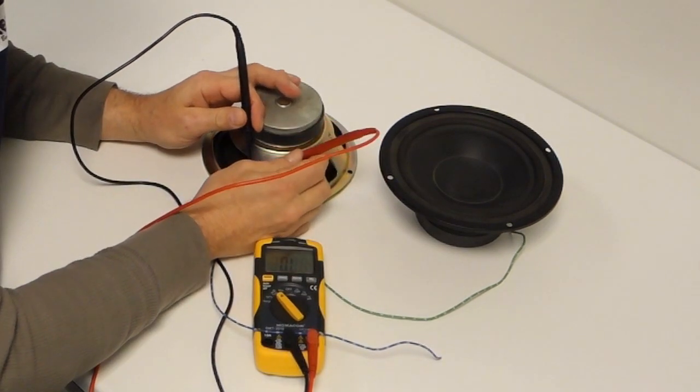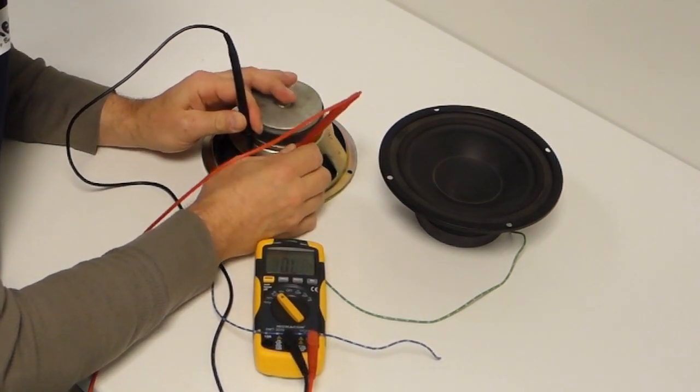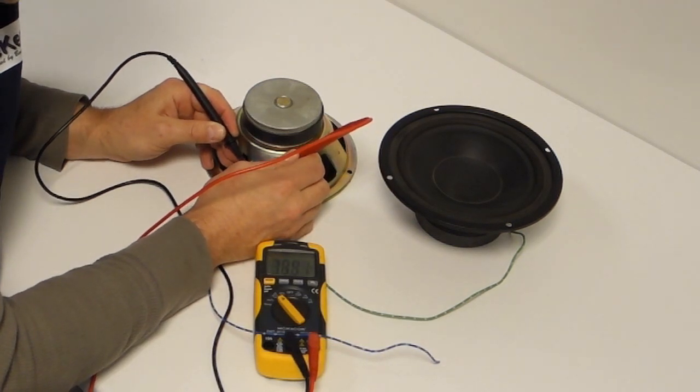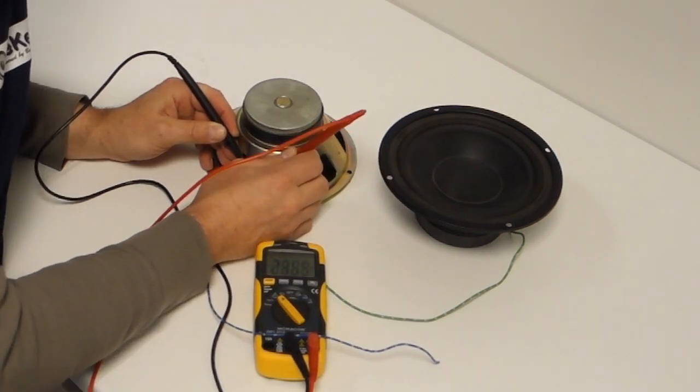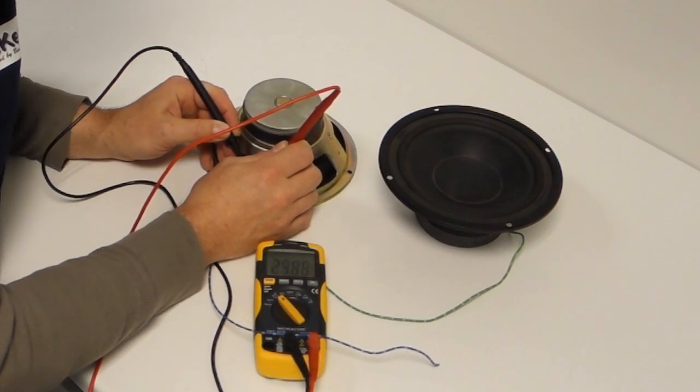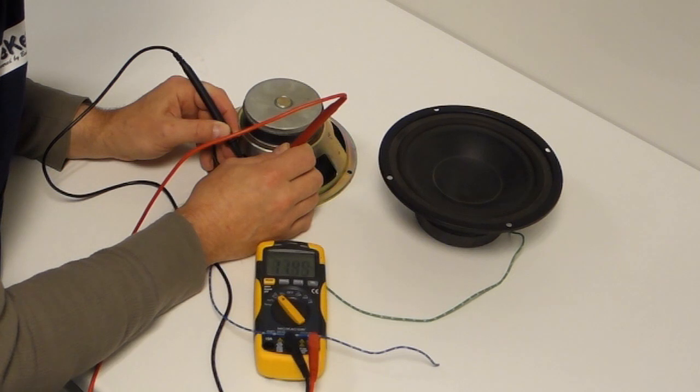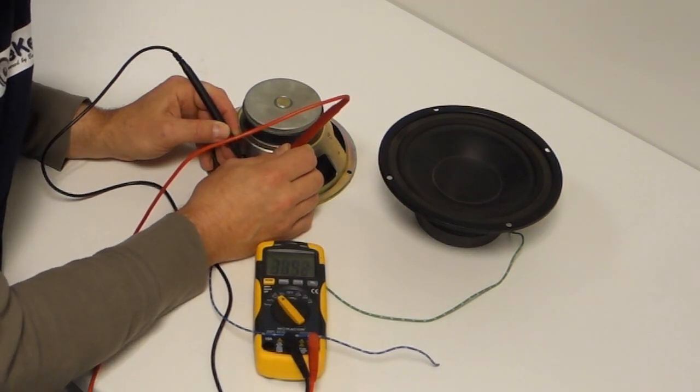So we're going to put the probes on here. You see there's no response on our gauge. That's a little bit. It's saying 11 to 23 mega ohms.